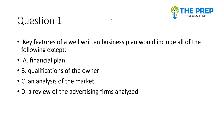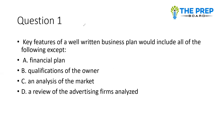Question number one: Key features of a well-written business plan would include all of the following except what? The options are: financial plan, qualification of the owner, analysis of the market, or a review of the advertising. The correct option for this question is 'qualification of the owner.' You can note the correct answer.